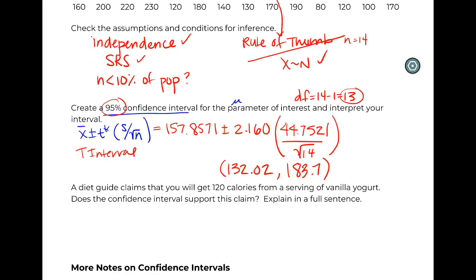And then we have our duality-type question here. We have a claimed amount of 120. Does it support the claim or not? So we can see 120 does not fall into the interval.